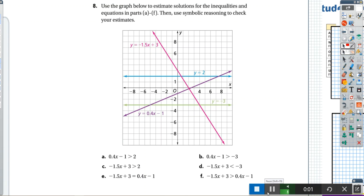So it seemed like there were some troubles last night on homework for problem number eight. So I'd like to try to resolve those problems now. You're being asked to use the graph to estimate solutions for the inequalities and equations in part A through F, then use symbolic reasoning to check your estimates.